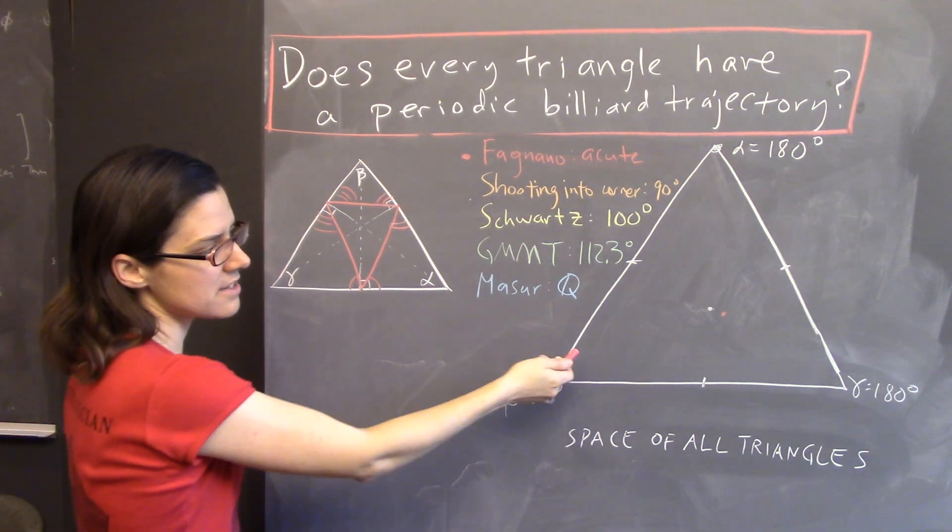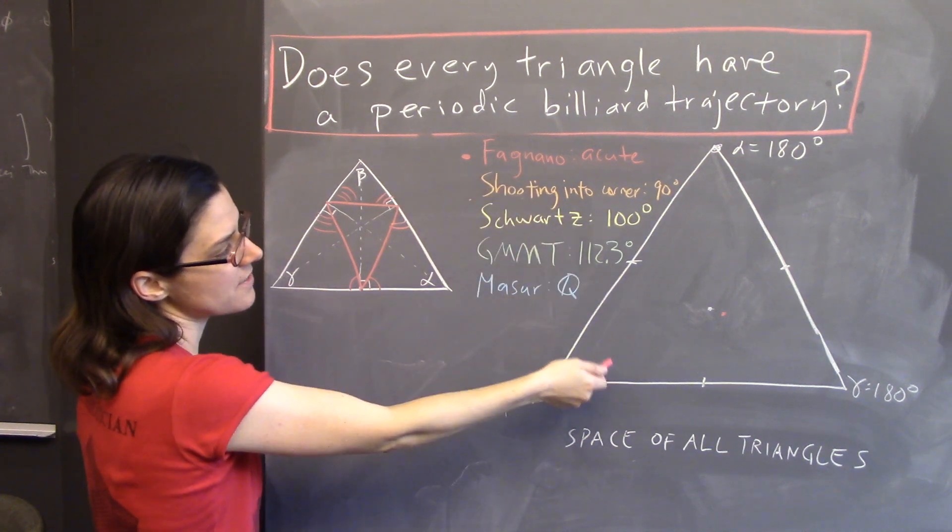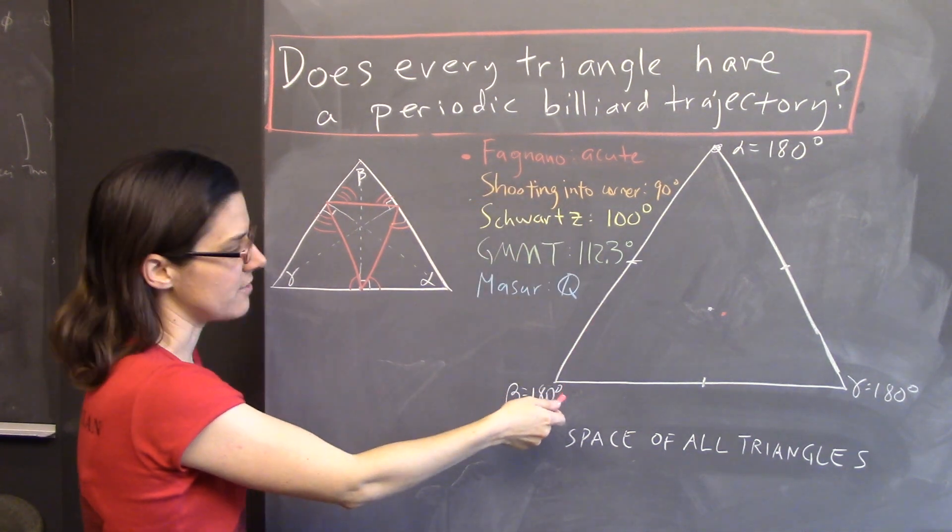So, over here is the space of all triangles. The Fagnano trajectory gives us that every acute triangle does have one.